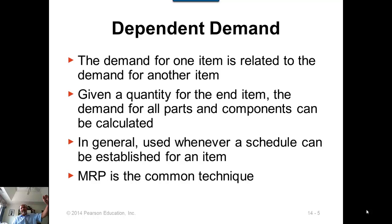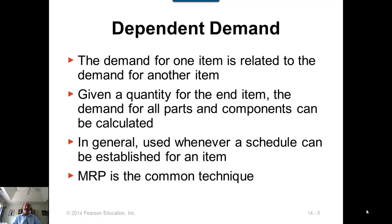Given a quantity of the end item, the demand for all the parts and components needed for its production can be calculated — both in terms of quantity and timing. That's the key feature of dependent demand items, which is why we model them differently than in chapter 12. In general, MRP — Material Requirements Planning — is used whenever a schedule can be established for an item, and it is the common modeling technique for dependent demand items.